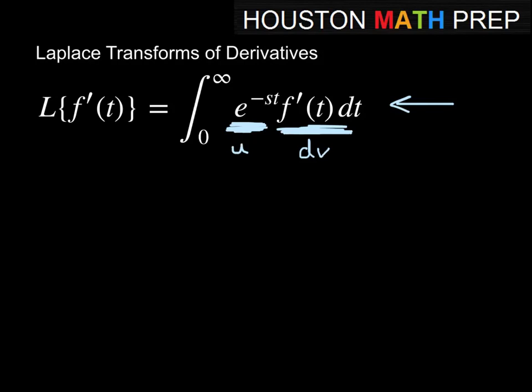So we set up: u equals e to the minus st, and dv equals f prime of t dt. Then du would be negative s e to the minus st dt. And v is just f of t, since dv is f prime of t dt. We go ahead and use all of that information to do the integration by parts.